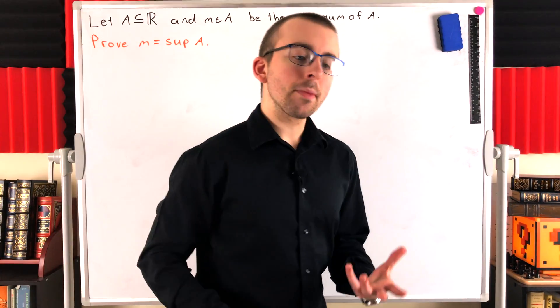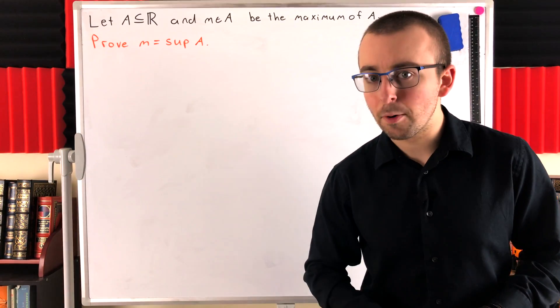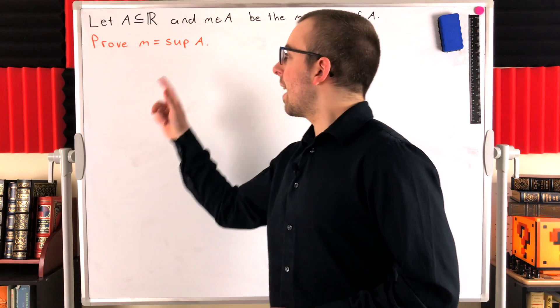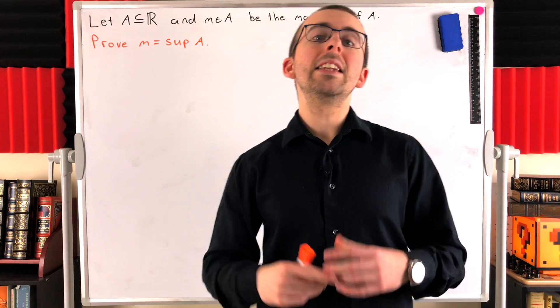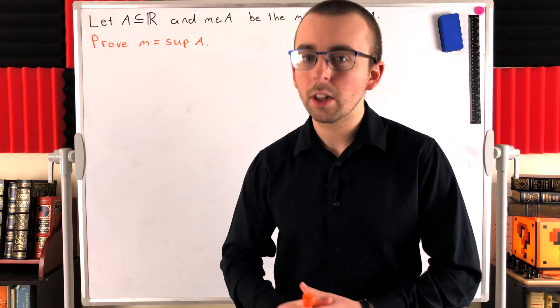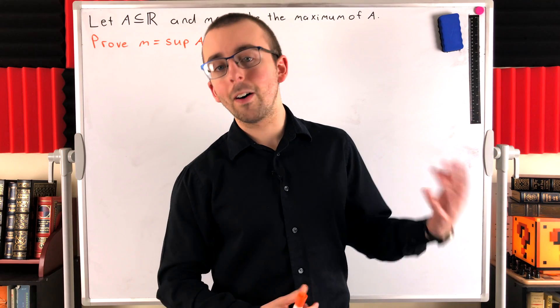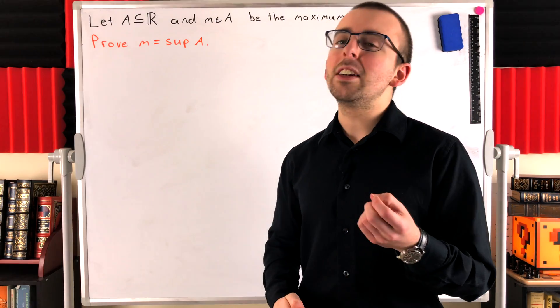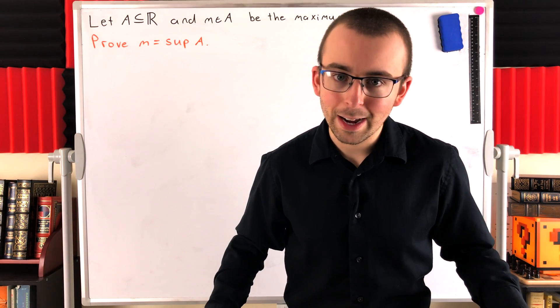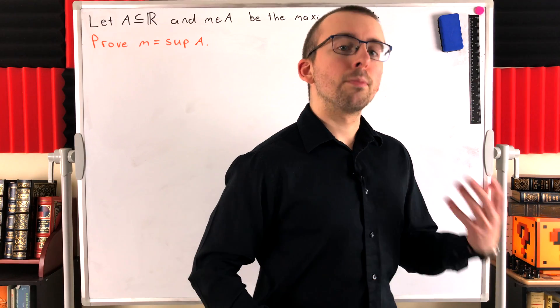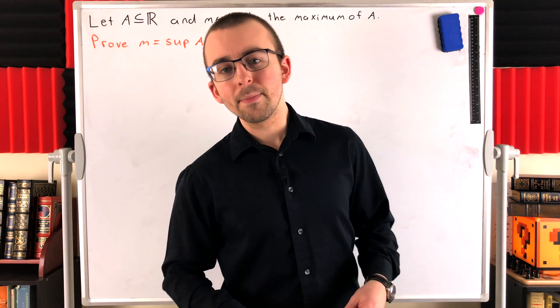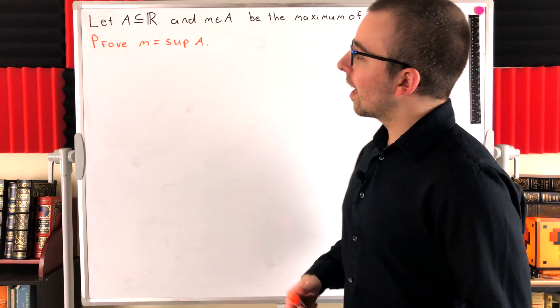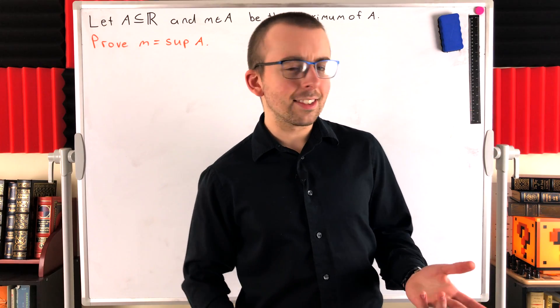Remember the supremum of a set is the least upper bound. So to prove that m is the supremum of A we need to show that m is an upper bound, which means it's greater than or equal to all elements of A. And we need to show that it's the smallest upper bound, so that there's no upper bound smaller than m, which can be shown easily in this case by contradiction.